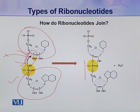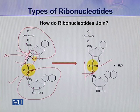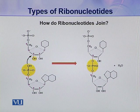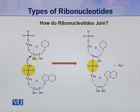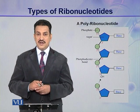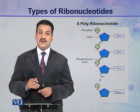This is called phosphodiester linkage because one phosphate group is linked with one pentose through an ester linkage, and a second ester linkage is also present — so there is one phosphate and two esters, hence the name phosphodiester. In this way, many ribonucleotides join together and make a polymeric chain which is called a polyribonucleotide, or ribonucleic acid.